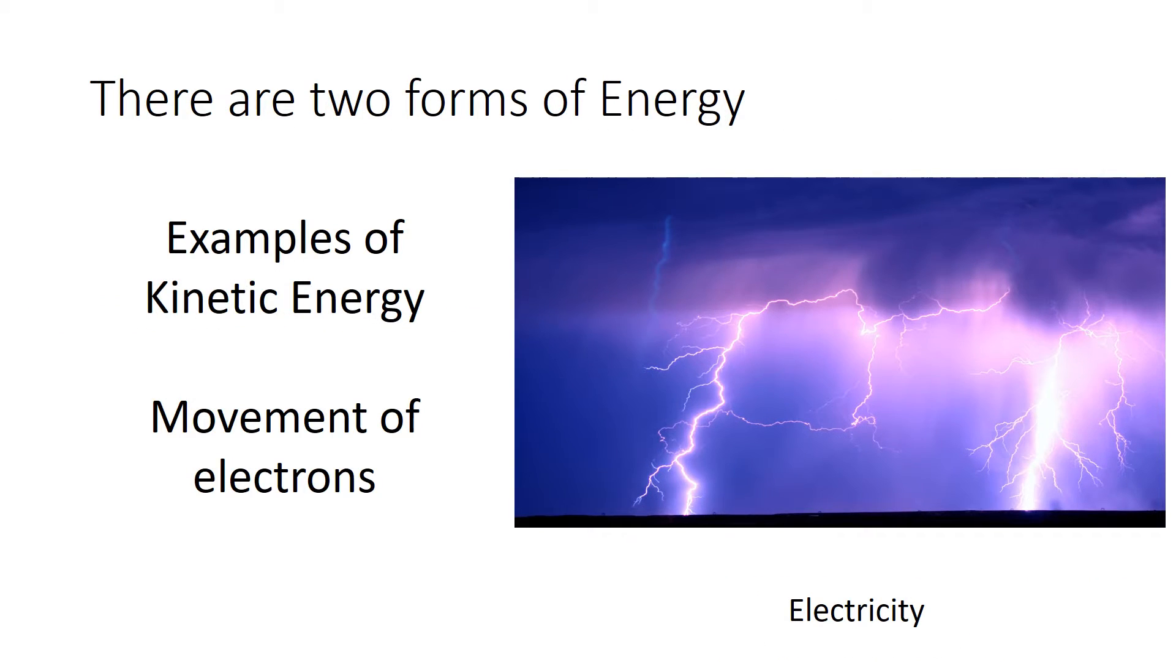Another example of kinetic energy is electricity. And for the most part, we think of electricity as the movement of electrons through a circuit. However, electricity can also be the movement of basically any ions. So as you can see, it's kinetic energy because things are moving around.